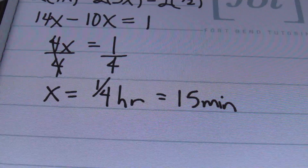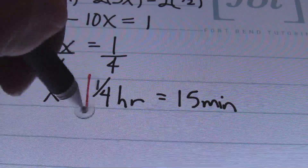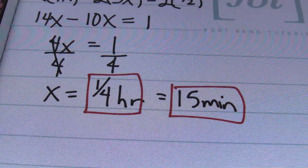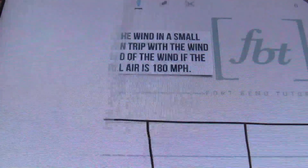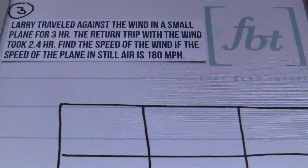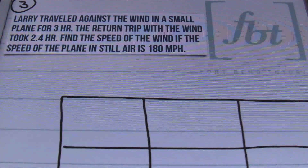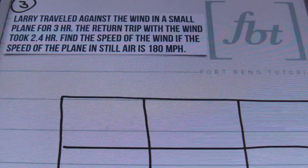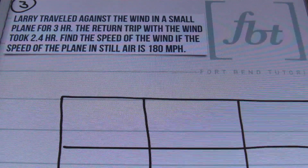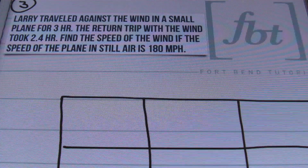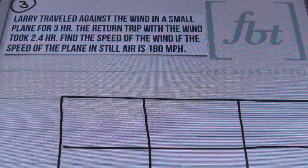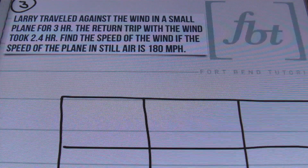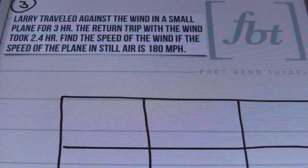There it is — that's the answer, ladies and gentlemen. Done and done. That's problem number 2. Next up is problem number 3. My namesake, Larry, traveled against the wind in a small plane for 3 hours. The return trip with the wind took 2.4 hours. Find the speed of the wind if the speed of the plane in still air is 180 miles per hour.